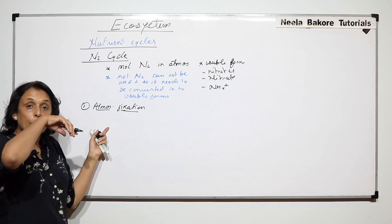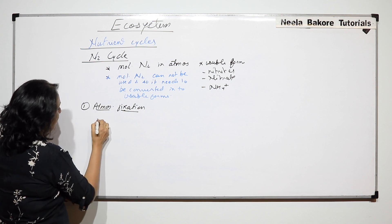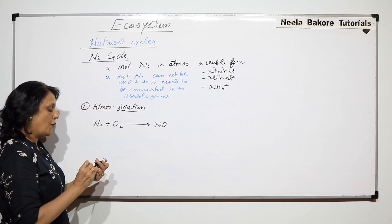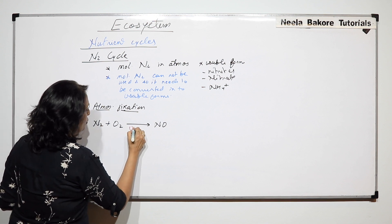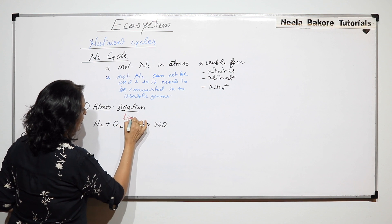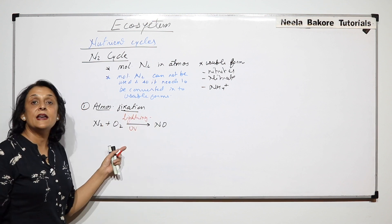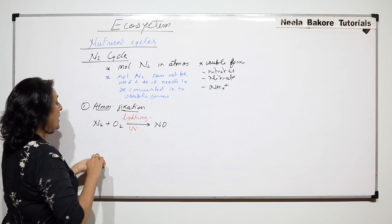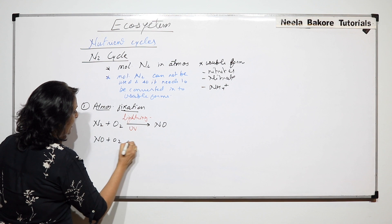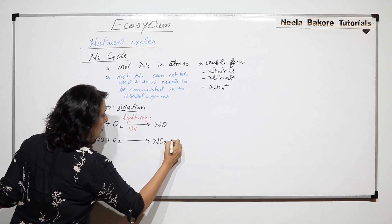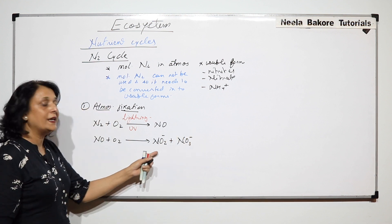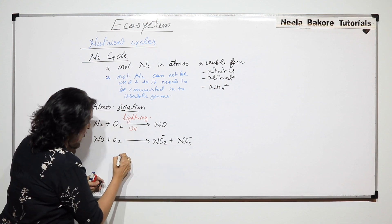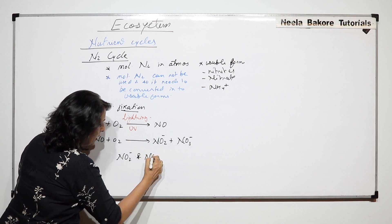Now how is this nitrogen fixed in the atmosphere? The first reaction is molecular nitrogen reacts with oxygen to form oxides of nitrogen. For this reaction to take place UV rays are required and lightning, thunder. So whenever there is thunder and lightning in presence of UV rays this reaction would take place.